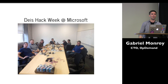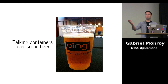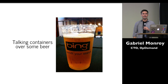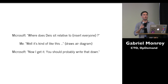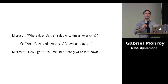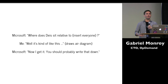At the end of it, we found some problems — specifically in their networking stack for Linux — and we're still sorting some of those out. But it was an incredibly valuable experience. One of the things that happened while we were there is we went out, as one does, and talked about containers over some beer. And I remember at one point the discussion went something like this: Microsoft, in their innocence, not really knowing the container space, asked where does Deis sit relative to Docker, CoreOS, Mesos, Kubernetes — literally everyone. And I was like, 'oh gosh, that's kind of a loaded question.' So I started to answer them by doing this little air-diagram thing.